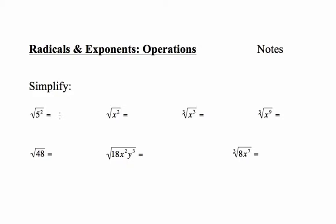There are a few ways to do this problem. One way is to simplify what's under the radical: 5 squared is 25, so we'd have the square root of 25, which is 5. Another way: if you have a square root and a squared, those are inverse operations, so they undo each other, leaving you with just 5.